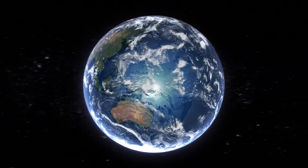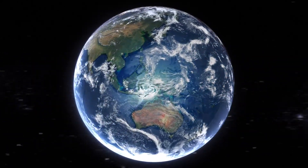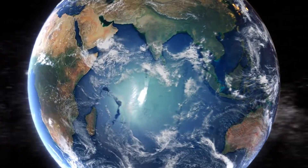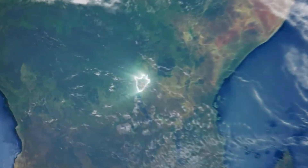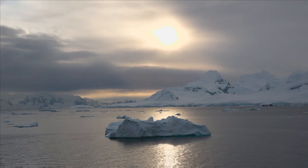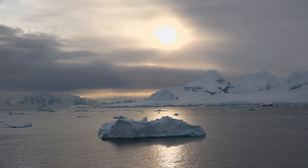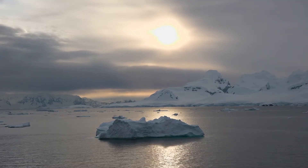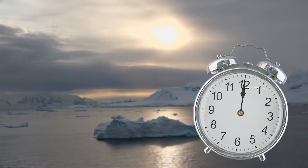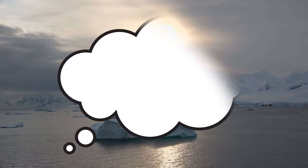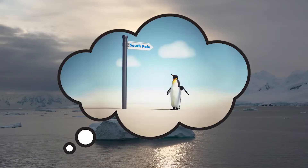Imagine you're an astronaut in space looking down at Earth. As you zoom in closer, you notice that it is sunny and daylight at the North Pole. But how can that be? You check your clock and it's midnight. So you wonder what is happening at the South Pole?